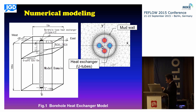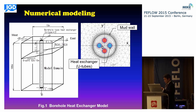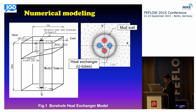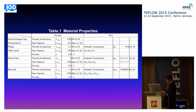Groundwater flow was given from east to west as a gradient of 0.02m per 10m. East and west border hydraulic potentials were given as constant values. Initial temperature distribution was uniform, and a constant temperature of 15 degrees Celsius was set at the east border face. All other faces were insulated. Hydraulic parameters and thermal properties are shown in Table 1. The groundwater flow velocity around the borehole is given by different hydraulic conductivity values.